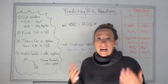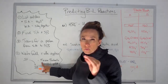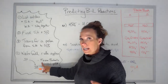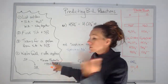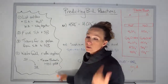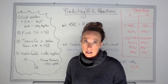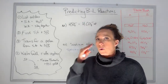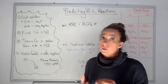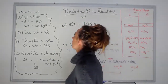What happens is we think 'spontaneous,' but we write down that it favors the products and that our percent yield will be greater than 50%. So when we think spontaneous, that's what we write — but we never actually write the word 'spontaneous.'